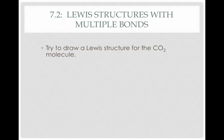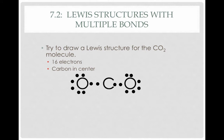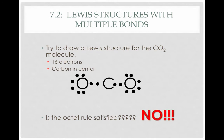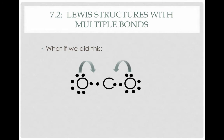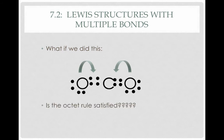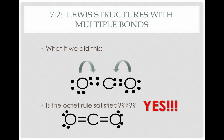Try drawing a Lewis structure for CO₂. You'll need 16 electrons with carbon in the center. If we distribute electrons using normal rules, carbon only ends up with four electrons and does not satisfy the octet rule, but we've run out of electrons. When we don't have enough electrons to satisfy the octet rule, we can use a double bond — moving pairs of electrons from the oxygens to share with carbon. Now carbon is sharing two pairs of electrons with each oxygen, satisfying the octet rule for all atoms.